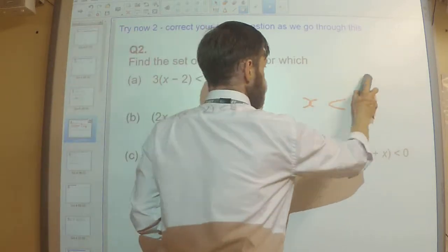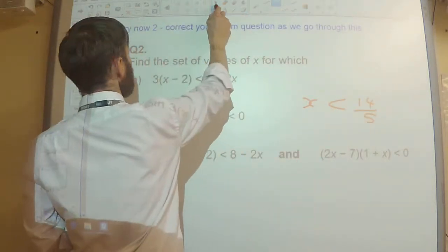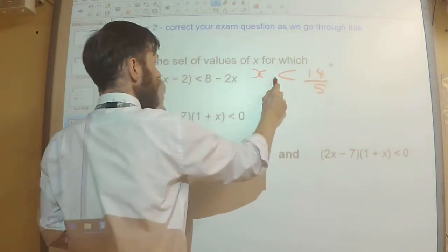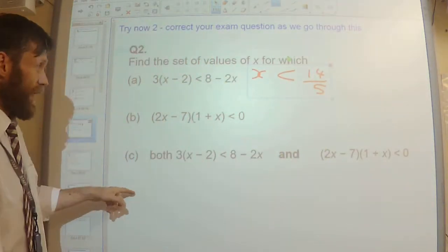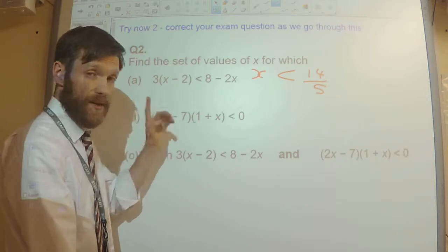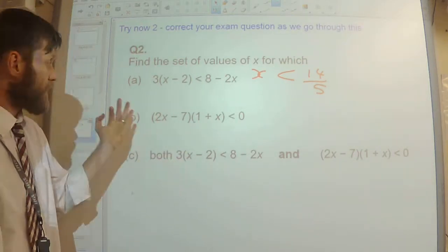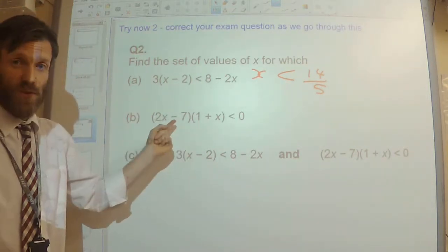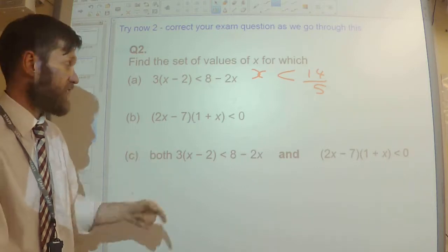Right, next part. We need to take a little bit more care of this next part because we've got a quadratic inequality. Thankfully though, it's already been factorised for us, so we can already get our critical points.